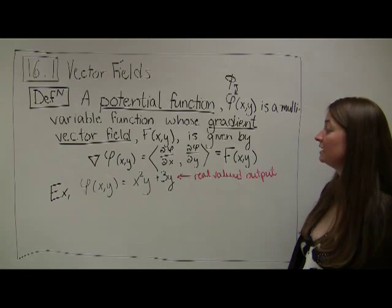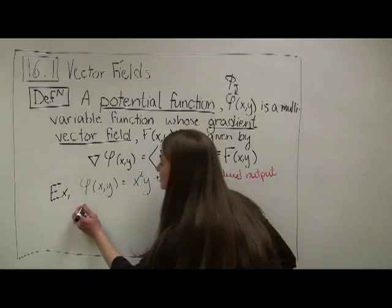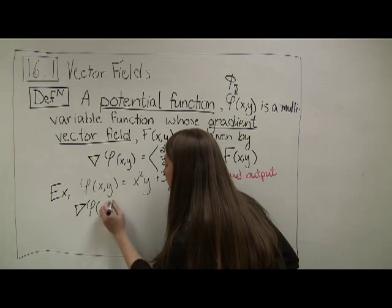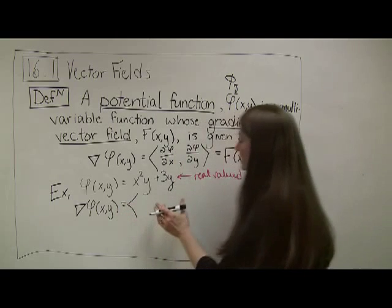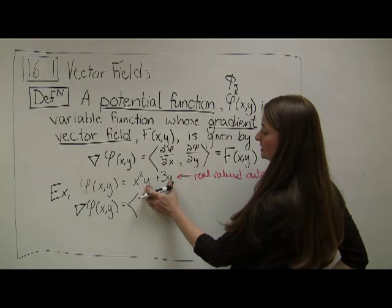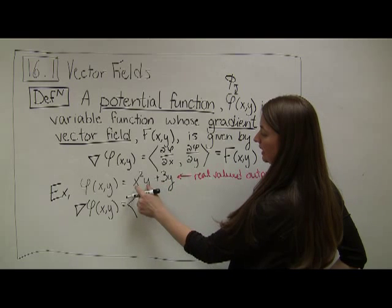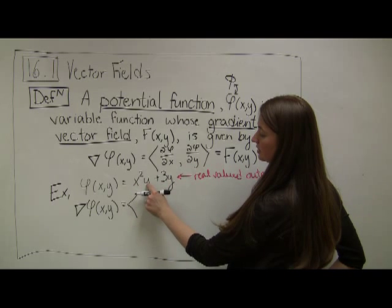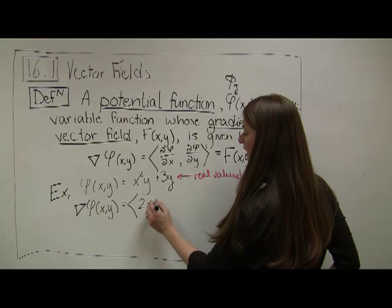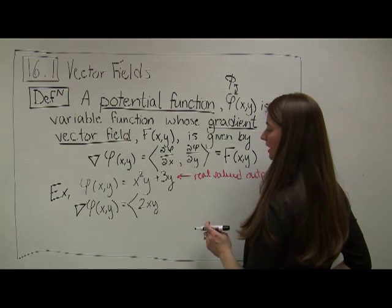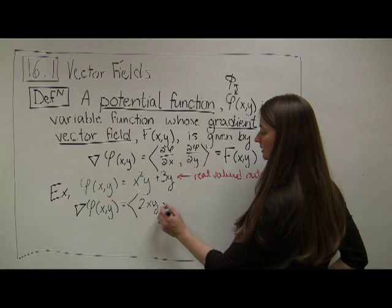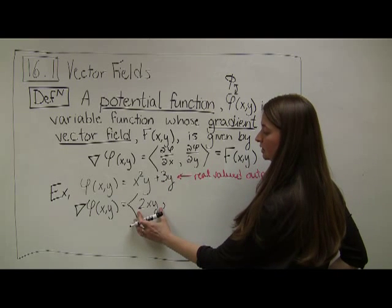The way we do that is by taking the gradient of phi. When I take the gradient of phi of xy, the gradient is the partial derivative of phi with respect to x — so I treat y as a constant. The constant y is just a coefficient, and I end up with 2xy because the y comes along for the ride. The 3y term goes to zero because we're treating y as a constant. That's my first component function.